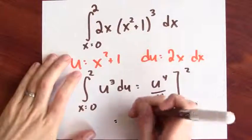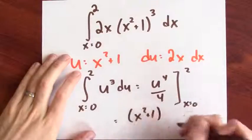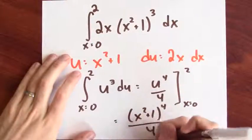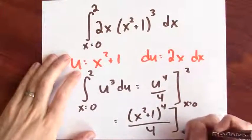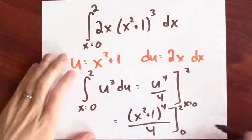And I want to make sure to evaluate this when x equals 0 and 2. Now we replace u by x squared plus 1. So this is x squared plus 1 to the fourth over 4. And I want to evaluate at 0 and 2. Now we plug in x equals 2 and x equals 0 and take the difference.